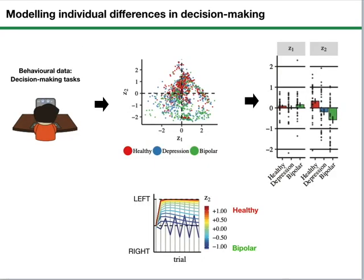And as an example, we have data for human subjects from three groups, bipolar, depression, and healthy. And then we map them to a low-dimensional space.